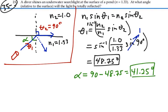If the diver shines it up at an angle with respect to the water surface of 41.25 degrees, it will reach the threshold of being totally internally reflected. Any angle less than that will also be totally internally reflected. The answer is 41.25 degrees.